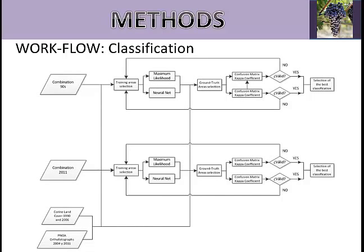Because of the application of a supervised classification algorithm, training areas were needed for each class, with more than 100 pixels per class. The supervised classification algorithms selected were maximum likelihood and neural network. For the maximum likelihood algorithm, a probability threshold of 90% was applied. For the neural network, it was applied with one hidden layer and 1,000 iterations.